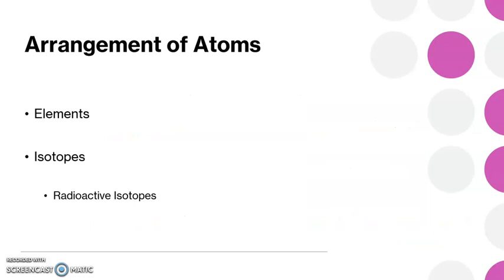So a couple other things about atoms, ways we can arrange those atoms. We can talk about elements. When we talk about elements, we are referring to a pure substance. So in this element, we're talking about lots of atoms that are all the same, same type of atom, such as hydrogen gas.